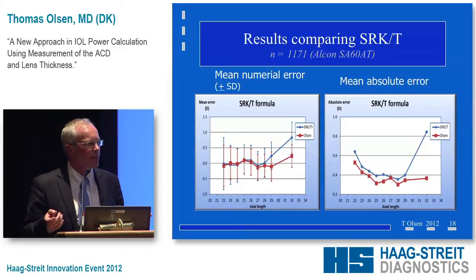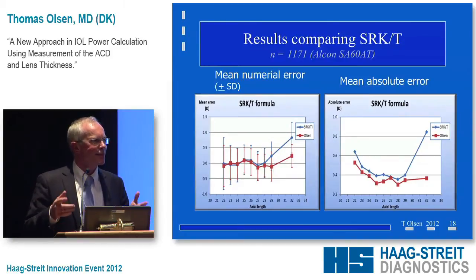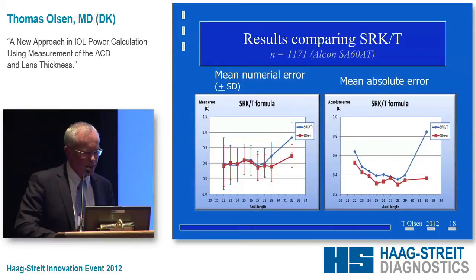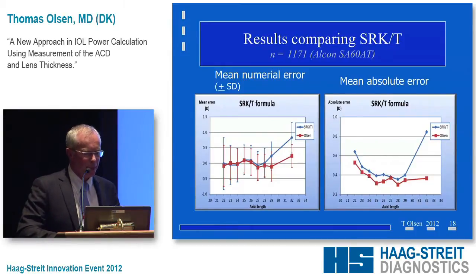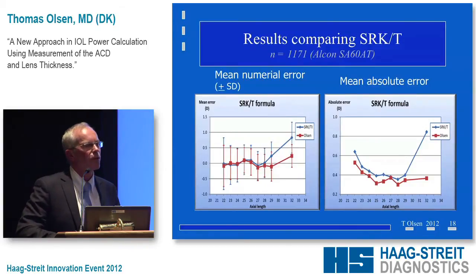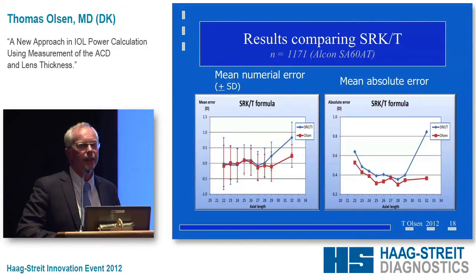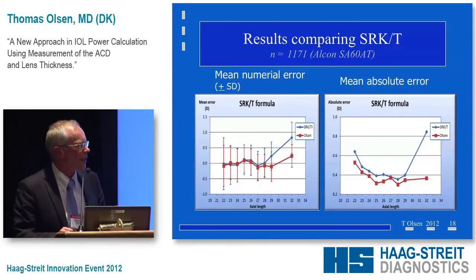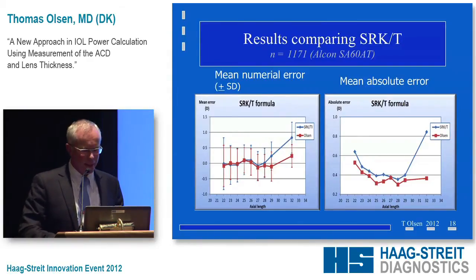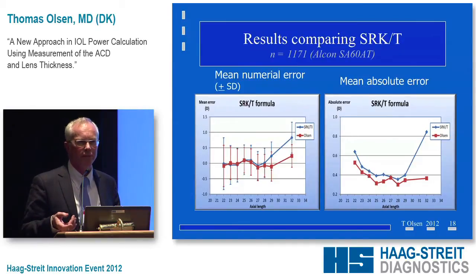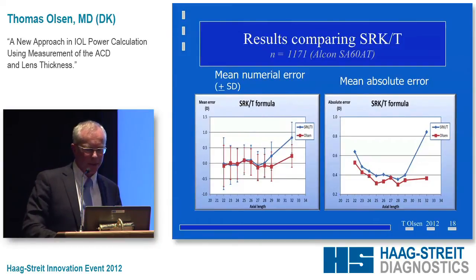Zero mean error doesn't mean every case is zero — there is a spread around the mean. Here on the left side, the blue columns are the SRK-T and the red ones are our approach. They end up on average the same, but what's more interesting is the spread around the mean. The mean absolute error shows that our approach performs very well compared to the SRK-T over the entire axial length range, especially in the long eyes.